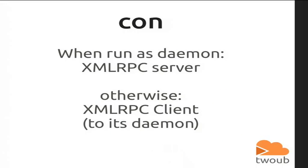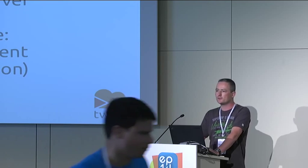CON has two modes. First mode: it can be run as a daemon, and then it is an XMLRPC server. Otherwise, it's an XMLRPC client to its own daemon. So basically, you start it as a server, as a daemon first, and then you can use it as a console script which connects to its own XMLRPC server.